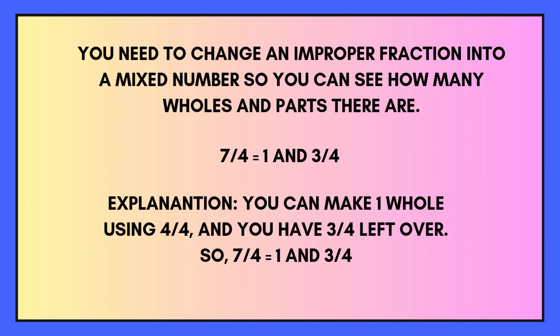Here we have an example: 7 quarters. We can get 1 four into 7, but we can't get 2 fours into 7 because 2 fours are 8. So when we organise it, we put 1 whole and we are left with 3 quarters.